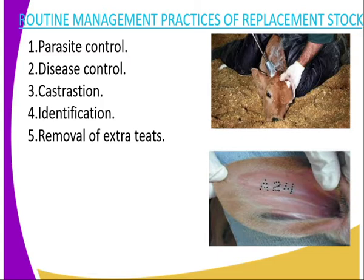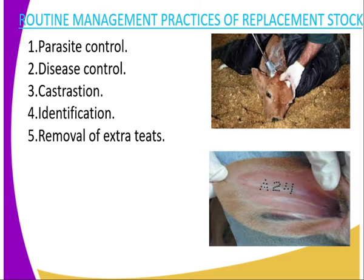The fourth routine management practice is identification, and there are several methods of identification as we discussed in the previous lessons. Then we have the removal of extra teats. In a young heifer, if there is an extra teat, you are supposed to remove it with a teat creeper so that you can eliminate the chances of the animal experiencing a mastitis attack in the future, because the extra teat acts as a predisposing factor for mastitis disease.